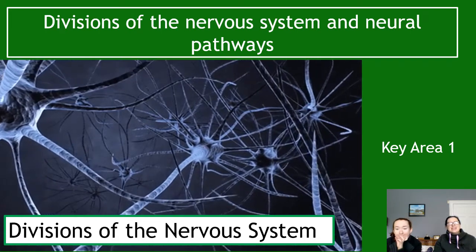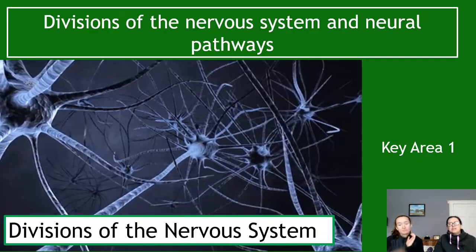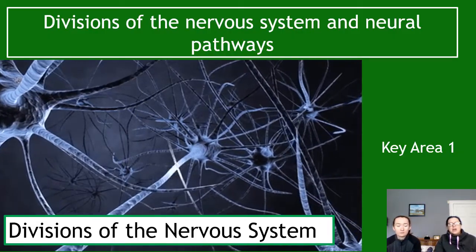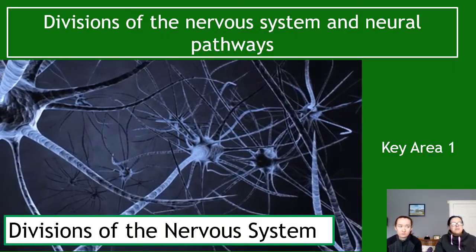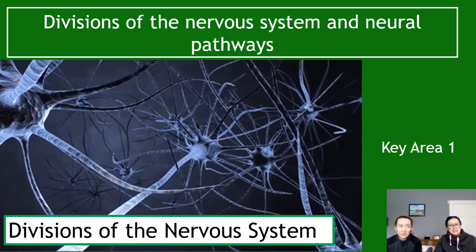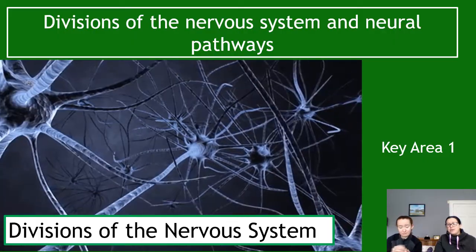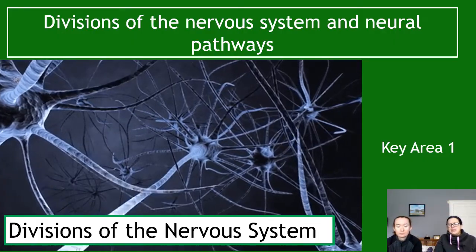Welcome to Unit 3, Key Area 1, which is about divisions of the nervous system and neural pathways. Knowing this would have really helped if I'd been able to do human biology at school. If you're thinking of doing a degree in biomedical science, medicine, anatomy, or sports science, this is going to be very helpful at university. You also need to know this to pass tests in human biology this year.